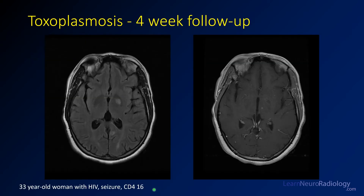On four-week follow-up for that same patient, the areas of FLAIR abnormality have gotten a lot better with much less edema. On post-contrast imaging, there are just a few little dots of enhancement but the mass effect has improved greatly. Within a month of starting treatment, there's been drastic improvement, which you would not typically see with lymphoma without treatment.